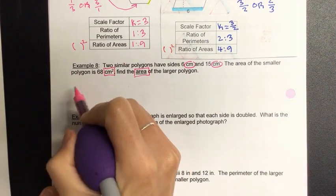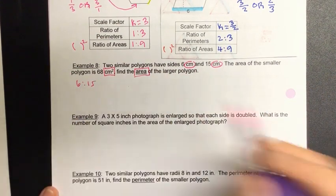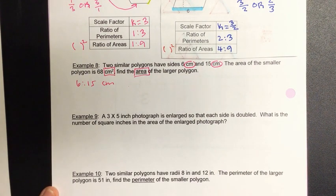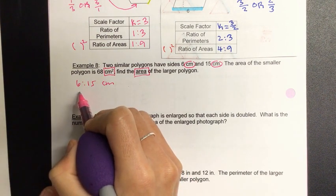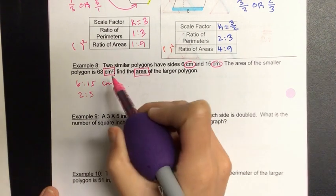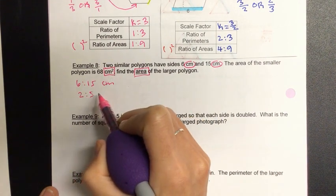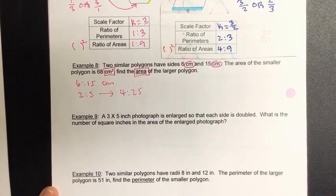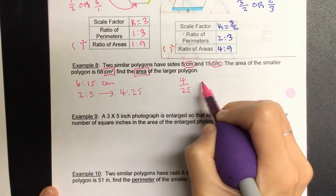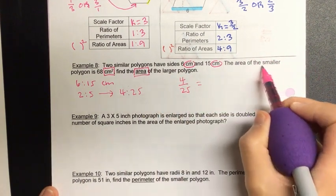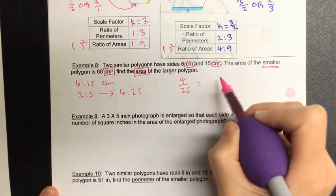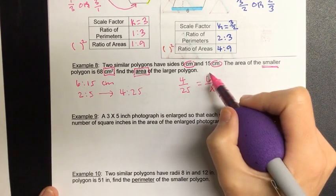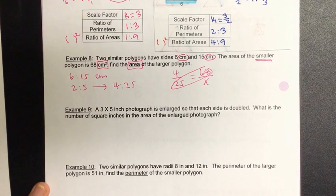So let's go to 6 to 15. I have 6 to 15, and that was centimeters. Now, can I reduce that if I wanted? Yeah. Okay, when I reduce this, I get 2 to 5. But since I want it to match, what do I need to do with 2 to 5? I need to square it. So I get 4 to 25. So we have 4 over 25 is equivalent to. Now I can put in 68 for the smaller number. 4 is smaller than 25. So 68 must go on top, x on the bottom. And let's go ahead and cross-multiply.